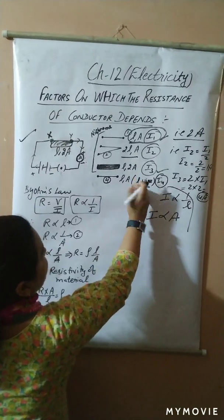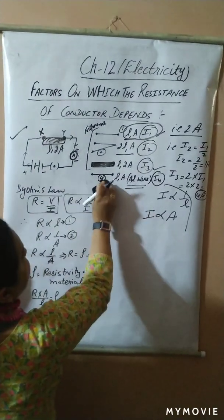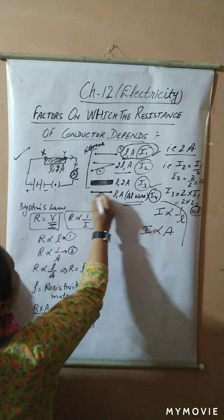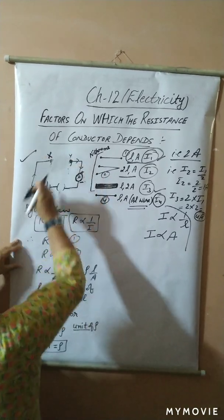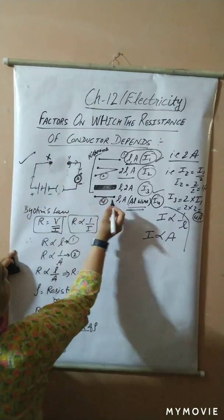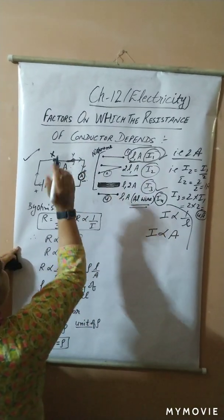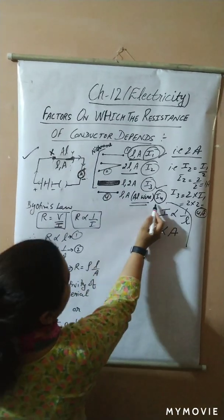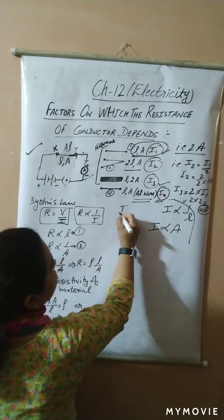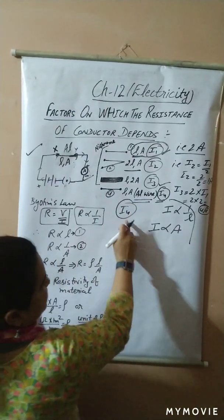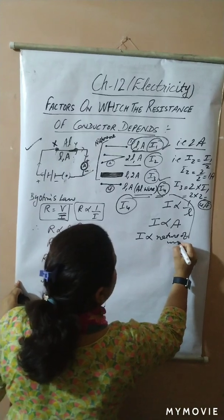For the fourth wire — I have written aluminum wire here — the material has been changed. Plug out the key, remove the previous connection, and connect this fourth wire of length L and area A, same as the nichrome wire, but this time it is aluminum. After plugging the key, we observe the ammeter reading is different. This reading is i4. So current is also directly proportional to the nature of the material.